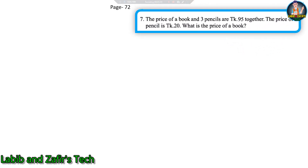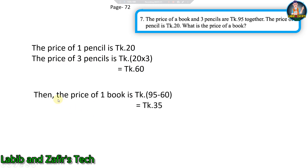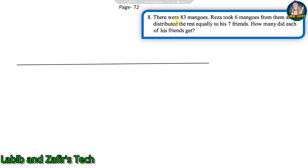Seventh question: the price of a book and three pencils together is taka 95. The price of a pencil is taka 20. What is the price of a book? First find the price of three pencils: taka 20 into 3 equals taka 60. Then the price of one book is taka 95 minus 60 equals taka 35. So the price of a book is taka 35.